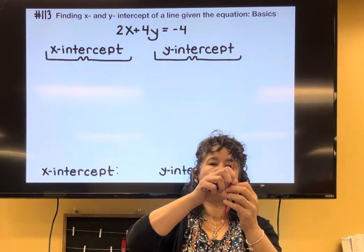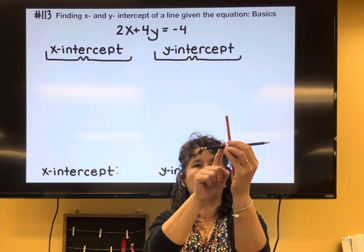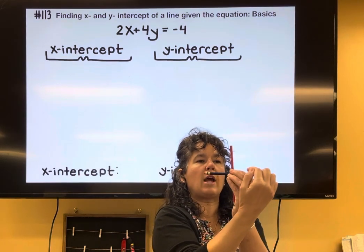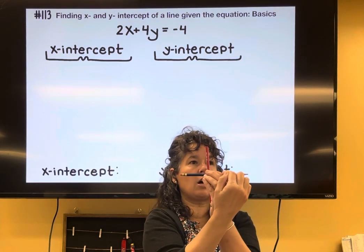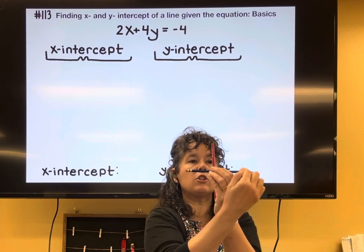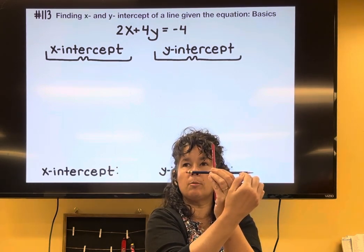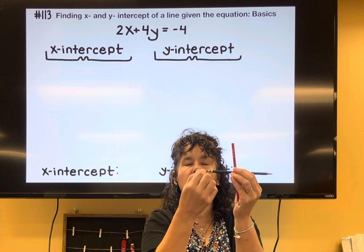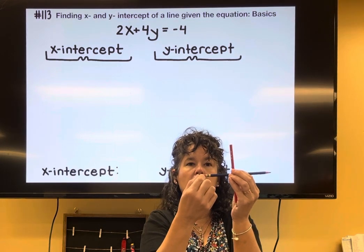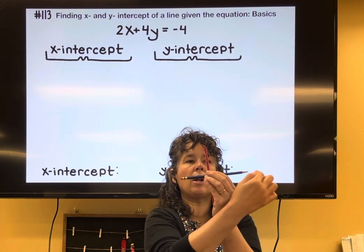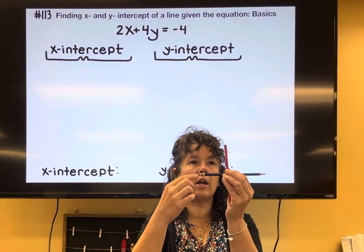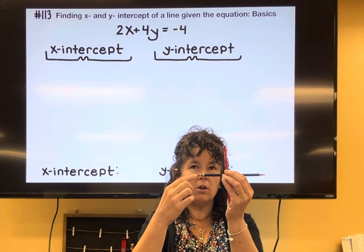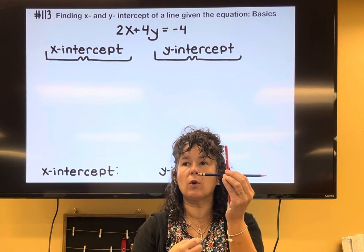I might go right 1 up 0, so it's 1, 0. Or if I go right 2 up 0, 2, 0. I might go back 3 up 0, negative 3, 0. Every single point on the x-axis, the y-coordinate is 0,